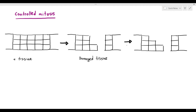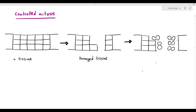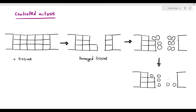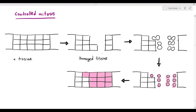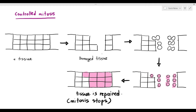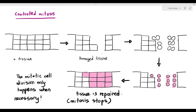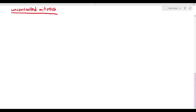The cells undergo mitosis and cytokinesis — going through G1, S, G2, then prophase, metaphase, anaphase, telophase, and finally cytokinesis — producing newly divided cells. Those new cells grow to fill the space and the tissue is repaired. Once the tissue is repaired, mitosis stops. This is called controlled mitosis — cell division only happens when it is necessary.